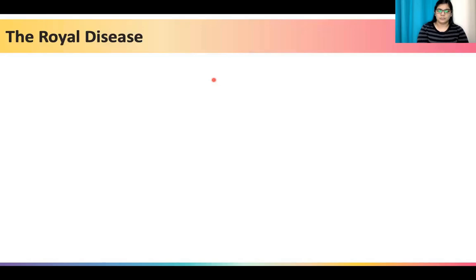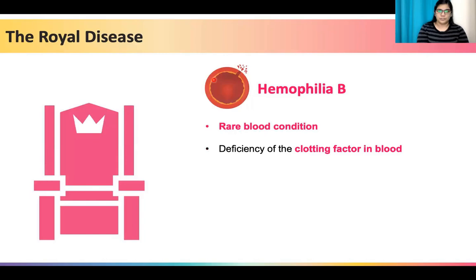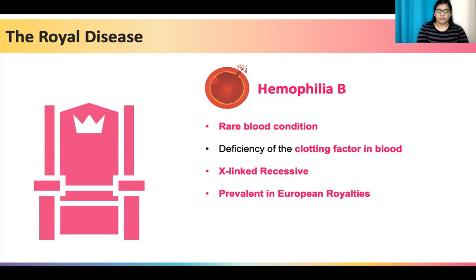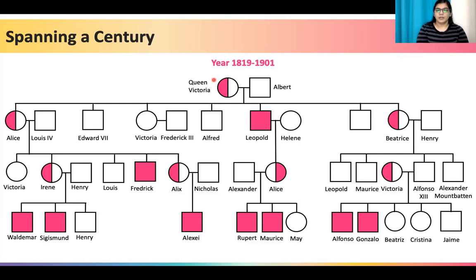Let us look at an example of such a genetic disorder known as Haemophilia B. It is a disease that plagued the royal family of England for generations, because of which it is also known as the royal disease. It is a rare blood condition caused by a deficiency of the clotting factor in blood, which leads to excessive bleeding through wounds and can eventually lead to death. The disease spanned several generations in the royal family from 1819 to 1901.